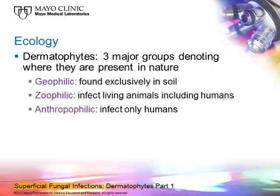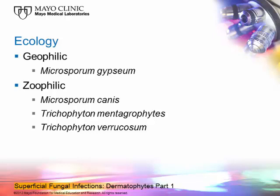Examples of these groups: the geophilic group includes Microsporum gypseum, found in soil — florists and people who handle soil are at risk. The zoophilic group includes Microsporum canis, which is highly infectious and affects dogs, cats, and humans. Outbreaks have occurred when infected kittens were brought into nursing homes. Trichophyton mentagrophytes and Trichophyton verrucosum, which infects cattle, are also zoophilic.